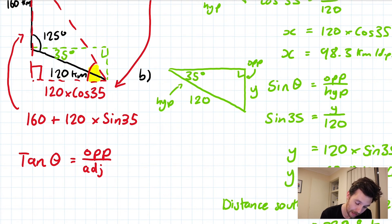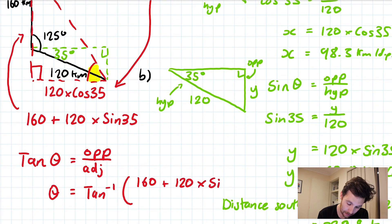So we've got tangent of the angle equals opposite over adjacent. With my triangle up here, the opposite is 160 + 120 × sin 35°. So to find my angle, I'm going to do my inverse tan function. The length of the opposite is 160 + 120 × sin 35°, and that's over the value of the adjacent, which is 120 × cos 35°.